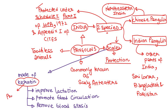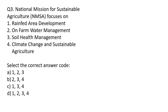Keratin is the protein present in your nails. However, these so-called health benefits are so far unproven. Pangolin meat is considered a delicacy in China and Vietnam, and that is why illegal trade of pangolins is happening.